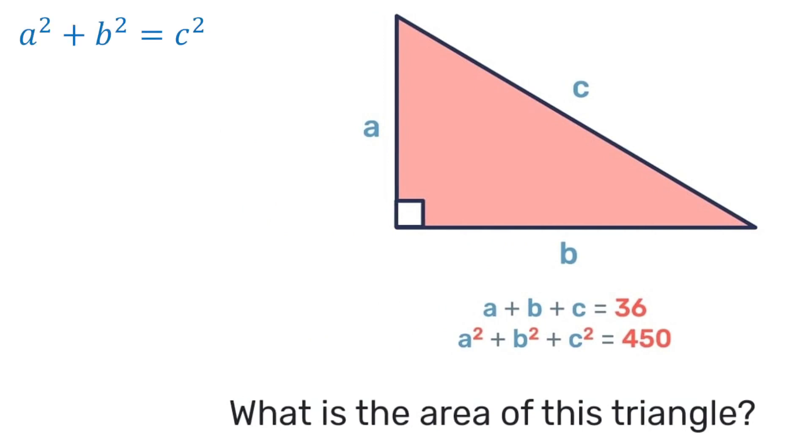Technically in that second equation at the bottom, we know that a squared plus b squared is equal to c squared, so we can replace that and have c squared plus c squared is equal to 450. Or in other words, 2c squared is equal to 450.